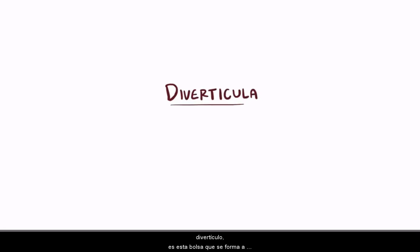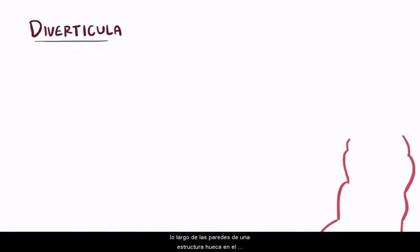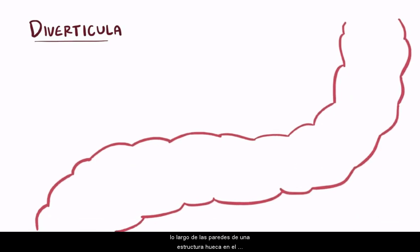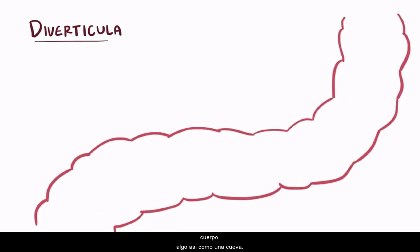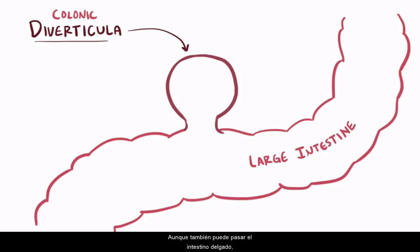Diverticula, or a single diverticulum, is a pouch that forms along the walls of a hollow structure in the body, kind of like a cave. Usually we talk about these caves or pouches in the context of the large intestine, so it would be a colonic diverticula, but it can also happen in the small intestine as well as other hollow structures in the body.